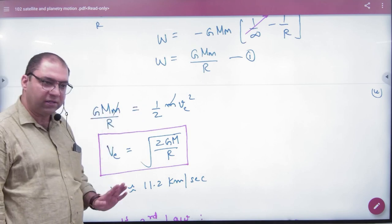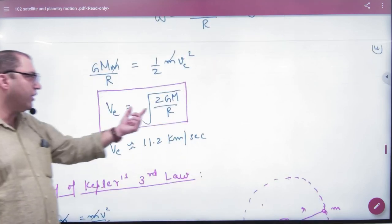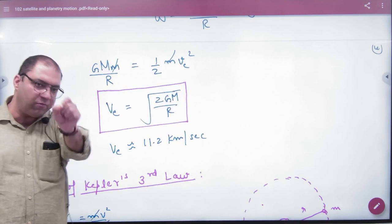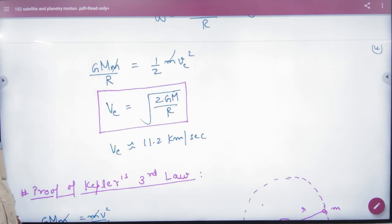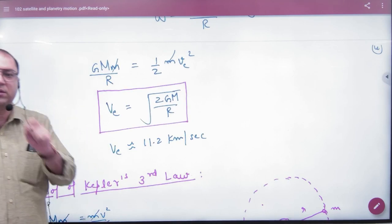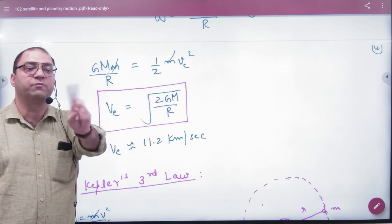Then into this, m cancels, so here the escape velocity value came. Please note that in the formula, under root of 2 Gm by r, escape velocity does not depend on the planet or object's mass.